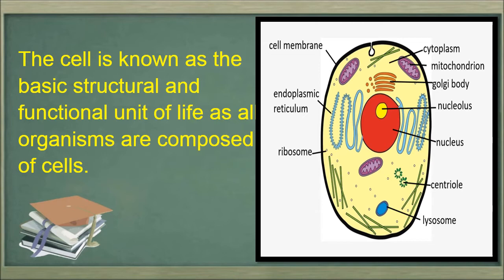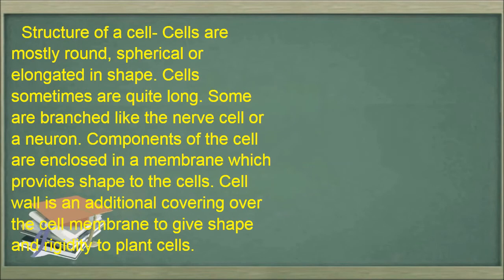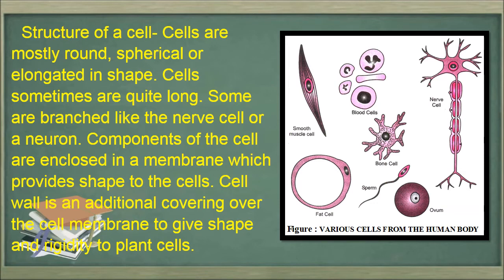All basic chemical and physiological functions of living beings — for example, repair, growth, movement, immunity, communication, and digestion — are carried out inside a cell. Cells are mostly round, spherical, or elongated in shape; some are quite long, and some are branched like the nerve cell or neuron. Components of cells are enclosed in a membrane which provides shape, and the cell wall is an additional covering over the cell membrane giving shape and rigidity to a plant cell.